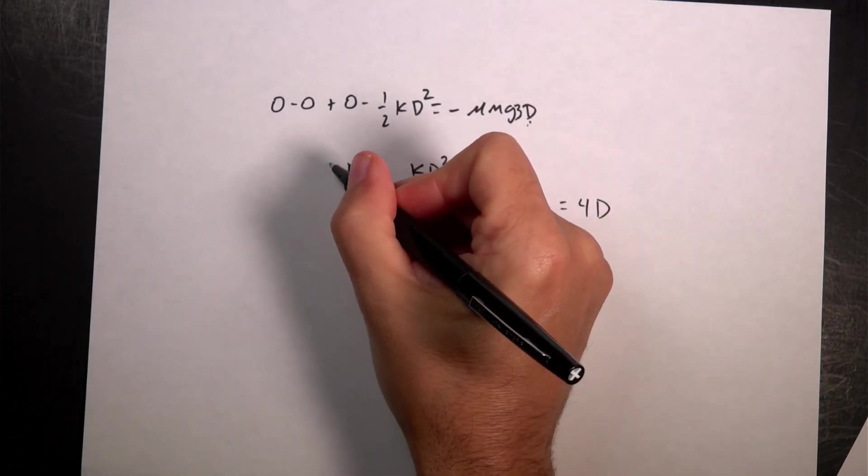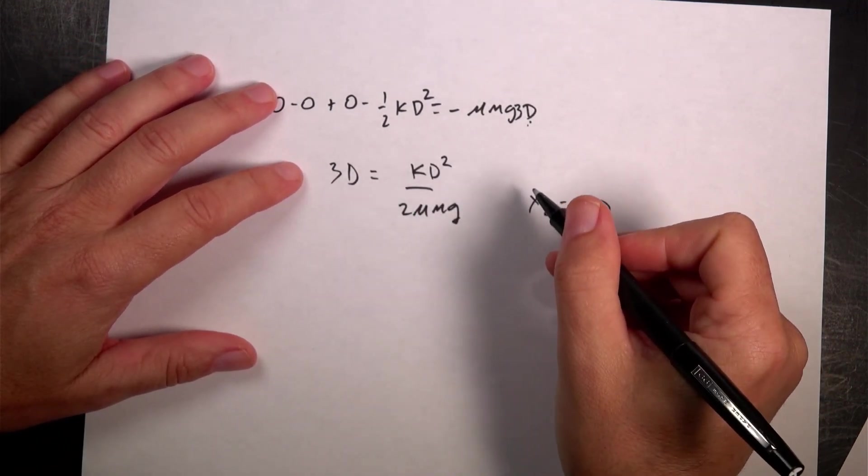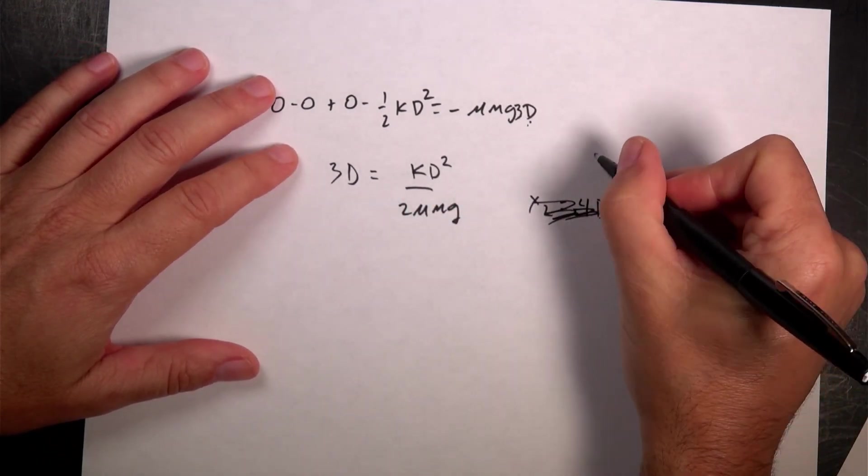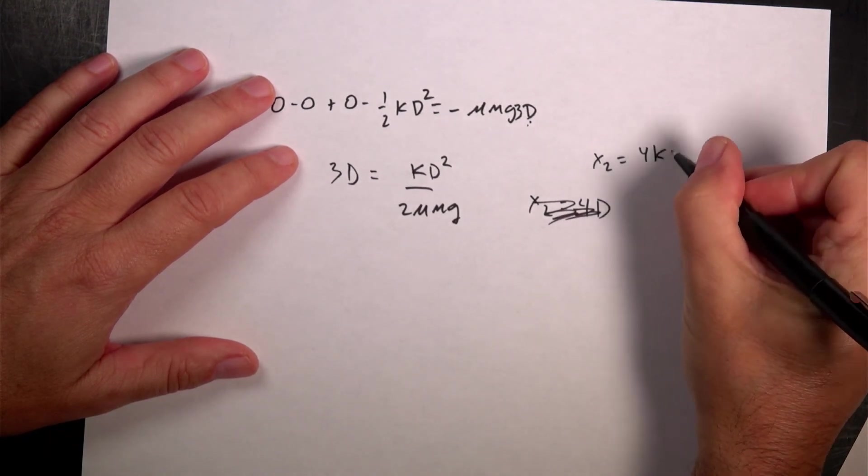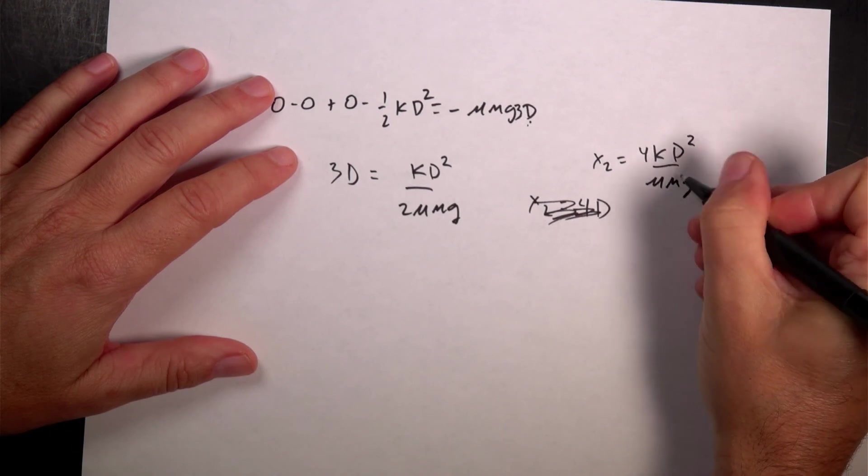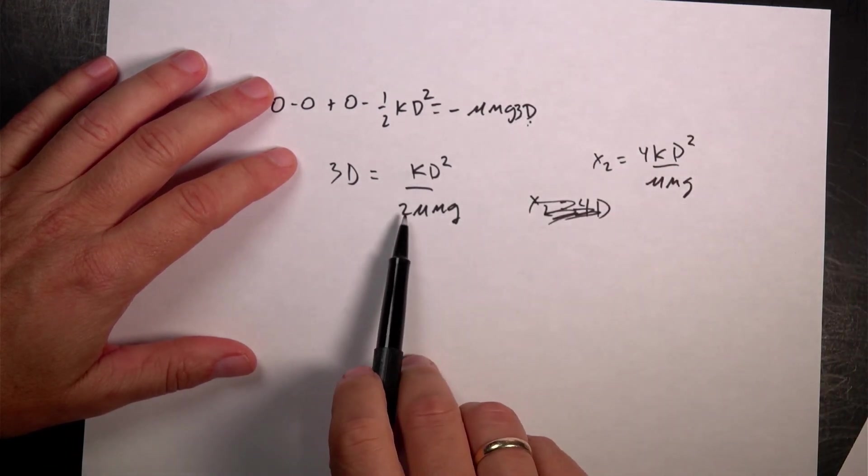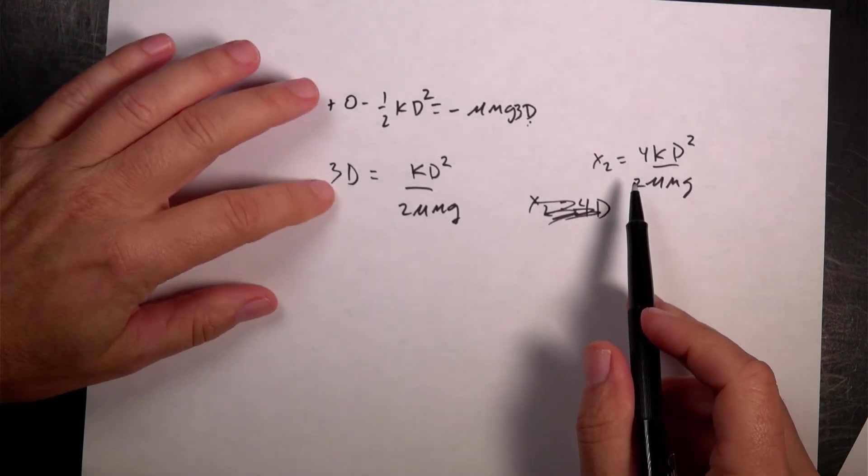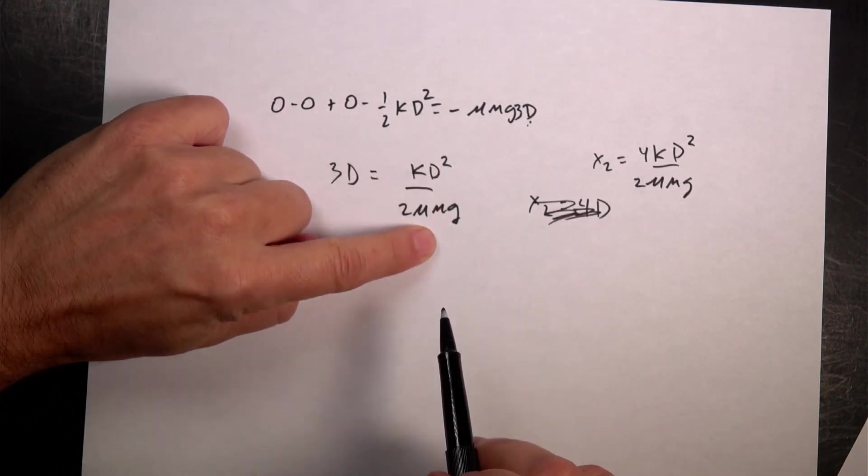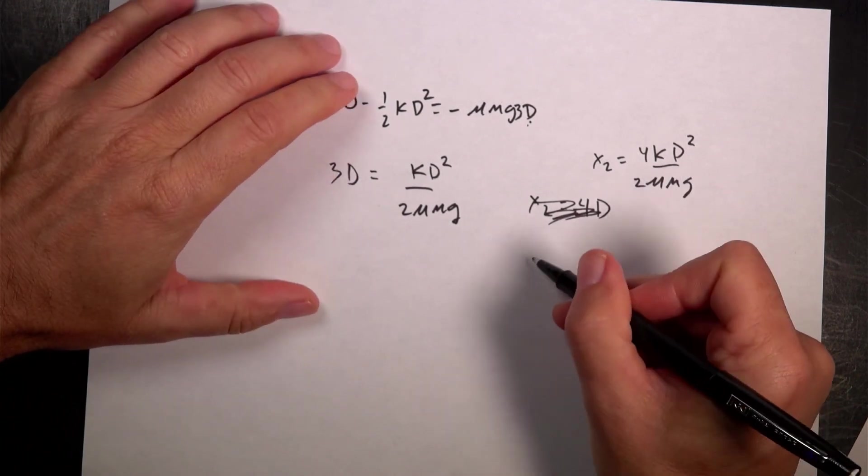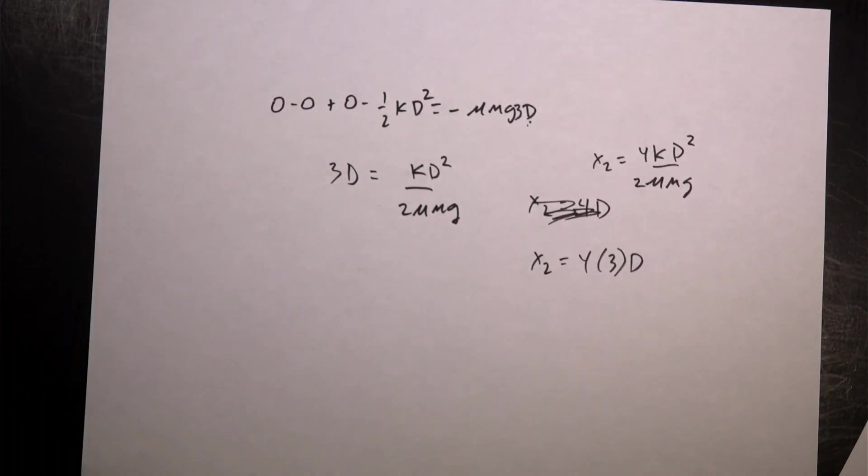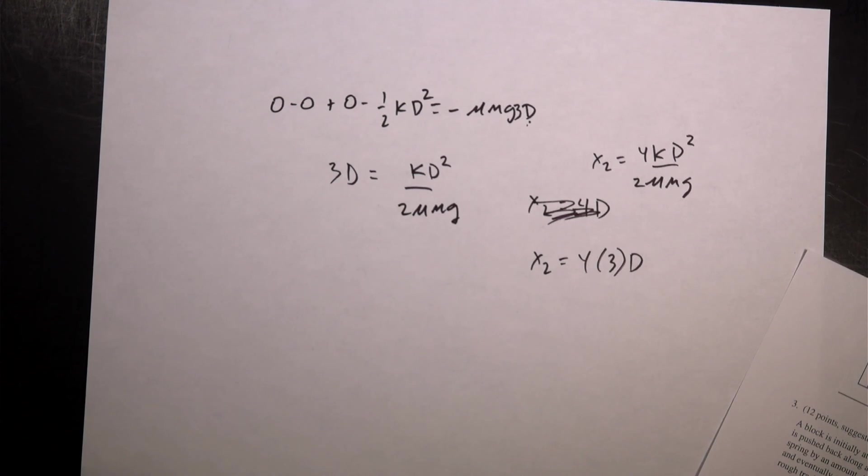Now, over here I had kd squared over mu mg is just, that's what I had before. So if I use this whole thing, I get x2 is 4 times that. So this is going to be 4 times 3d. And the other one I had was x2 equals 4kd squared over mu mg. I want to find this term right here. So if this term right over here is this term, so that's going to be equal to 3d. So x2 is going to be 4 times 3d, which is 12d. Yeah, that's it. I think that's right.